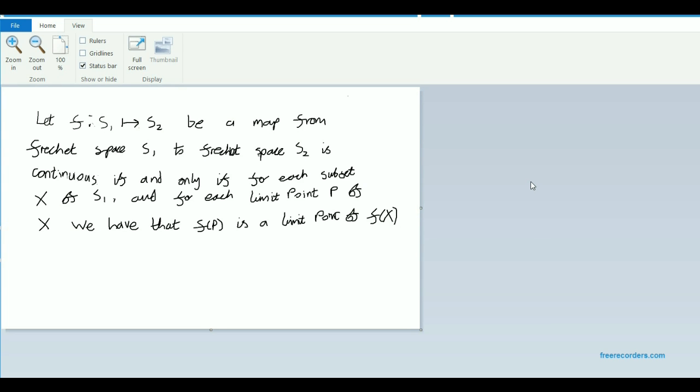So let's suppose that S1 and S2 are Fréchet spaces. And let's suppose that we have a mapping F from the elements of S1 to the elements of S2. Now it turns out, we can take this as a definition if we like, we can take it as a definition that this mapping F is going to be continuous